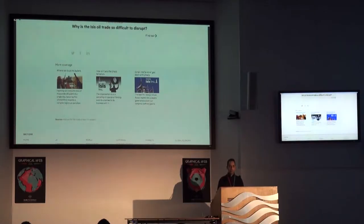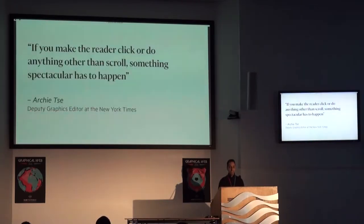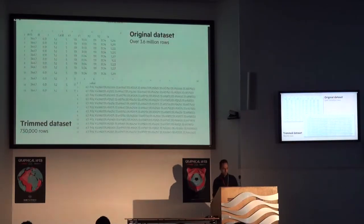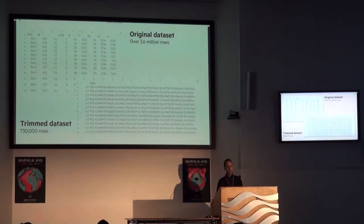This was summed up very well earlier this year at a data visualisation conference. Archie Cherry, who's a vector graphics editor at the New York Times, basically said: if you make the reader click or do anything other than scroll, something spectacular has to happen. If you make a tooltip or rollover, assume no one will ever see it. If content is important for readers to see, don't hide it. So with this in mind, we agreed to take on the project in the format of a long-form story with narrative interspersed through graphics and charts.